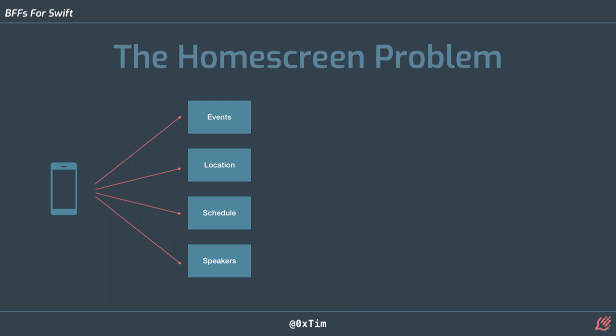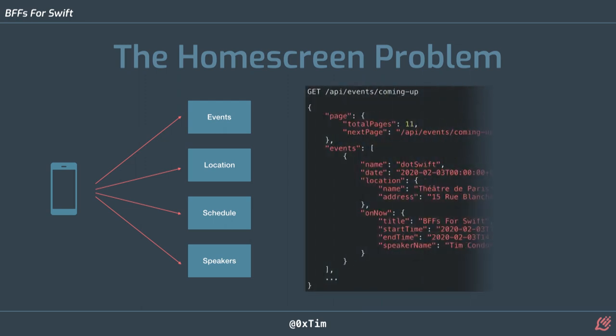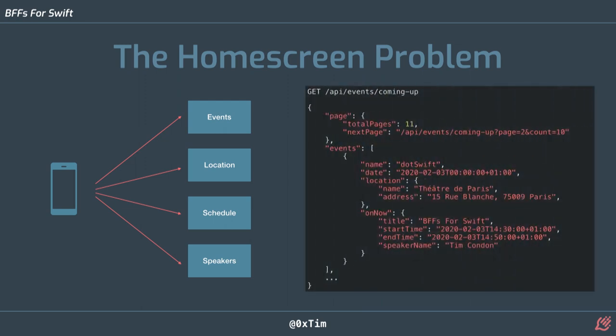So to populate our home screen, we're making four to five hundred network requests just to fill it up. When all we really wanted was to make one request to our backend to get some pagination information so we can keep scrolling nicely, and an array of events with just the information we need.